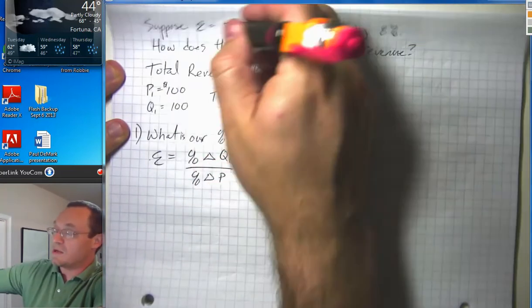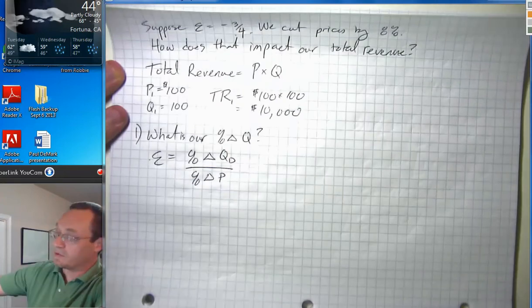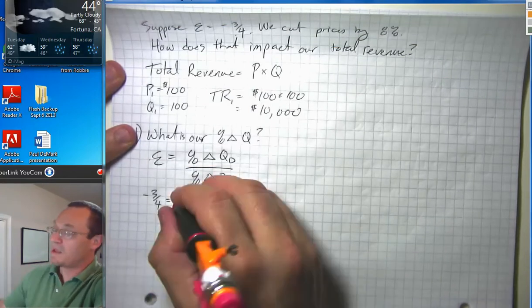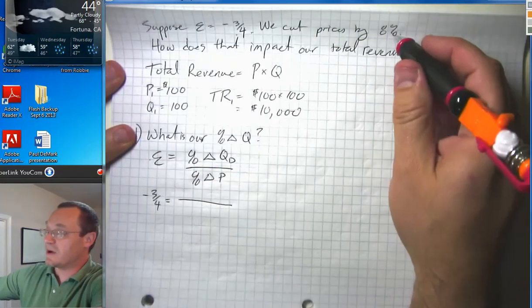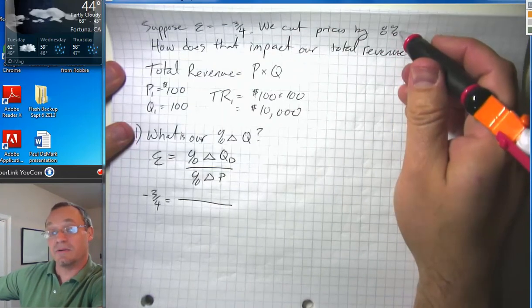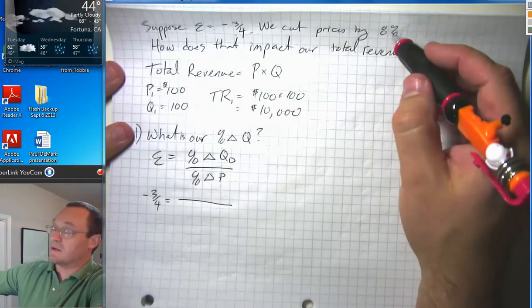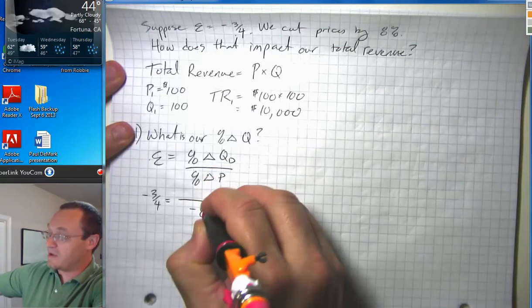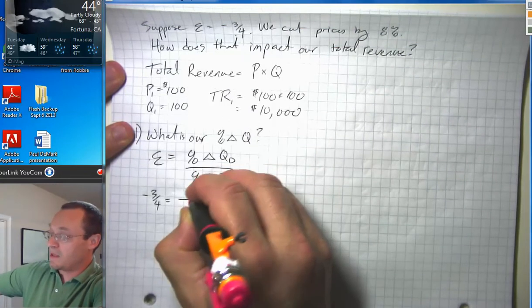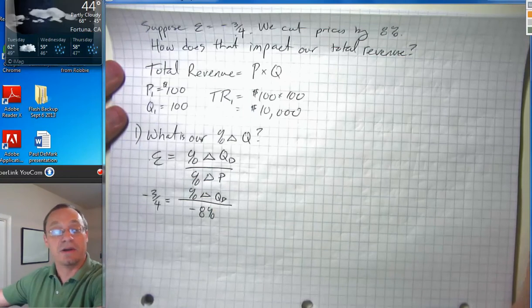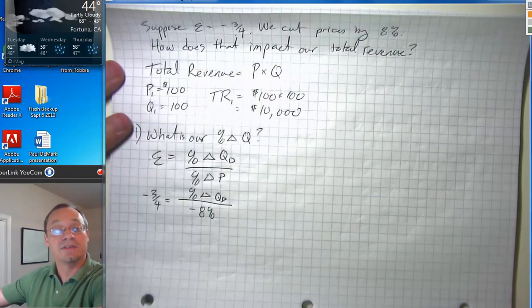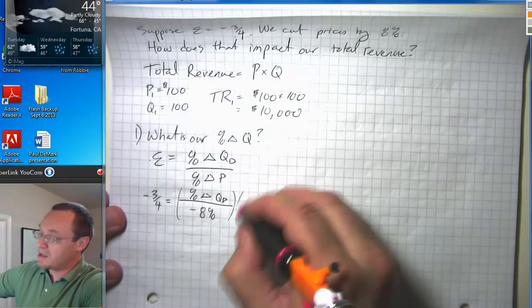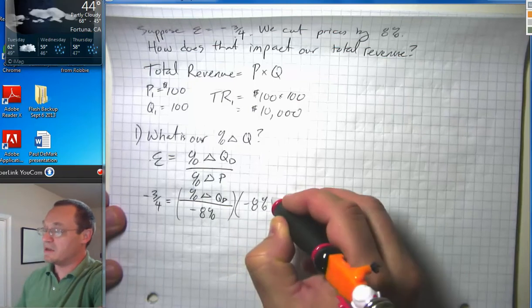We know our elasticity number is negative three-quarters, and our percent change in price is what? Now this one will trick you. It's eight percent, but it's a price cut, so it's negative eight percent. So we have negative eight percent here on the bottom and percent change in quantity demanded, our unknown, still remaining on the top. We're going to multiply both sides by negative eight percent.